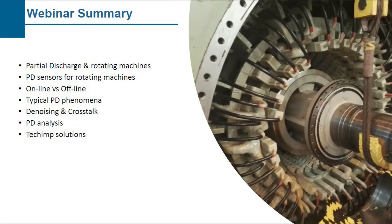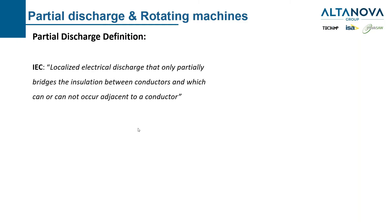Here is what we are going to speak about today. We will start with generic partial discharge and rotating machine topics, then go into PD sensors for rotating machines. We will see the differences between online tests versus offline tests for PD measurements, give a brief overview of typical PD phenomena, discuss denoising the signal and identifying crosstalks, then go through PD analysis, and finally present a short list of key products and services for rotating machine PD tests.